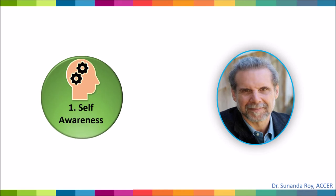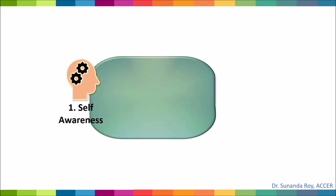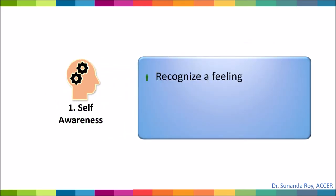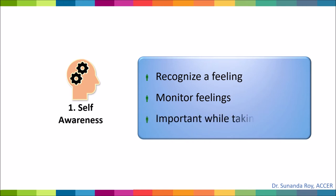The first competency is self-awareness. This means recognizing which emotions one is feeling and why. The person is able to monitor his or her feelings which affect their performance. The individual is aware of his strengths and limitations and is open to feedback from others. Being able to monitor our feelings becomes very important especially while taking sound decisions. It is wisely said that one should not take decisions when one is angry, as most of the time such decisions aren't the correct ones and we regret making them later.